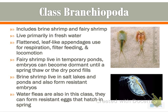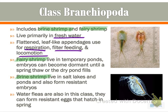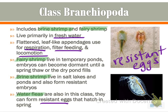The last class is Branchiopoda — the brine shrimp or fairy shrimp. These are unique because they live primarily in fresh water. They have a flattened leaf-like appendage used for respiration, filter feeding, and locomotion. Fairy shrimp live in temporary ponds; their embryos can become dormant until a spring thaw or until a dried pond refills. Brine shrimp live in salt lakes and ponds and also form resistant embryos. Water fleas are also in this class and form resistant eggs. The resistant eggs are key to ensuring the survival of these species. And that is it for part one.